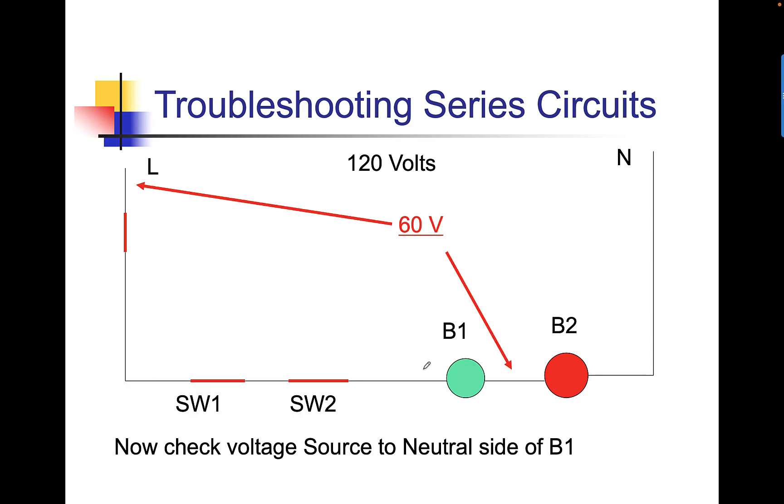Now, remember what I said, voltages in a series circuit, the loads are not getting full source voltage. So in this case, the voltage across B1 is only 60 volts. Well, the voltage across B2 will also be 60 volts, but they add together to come up 100. Did you see that? I have 60 volts there from L to between the two loads. And then I go to 100 after the second load. So the voltage across both loads together equals source. Again, that's very important to remember.